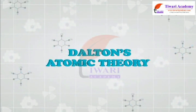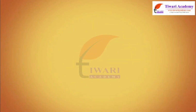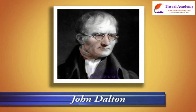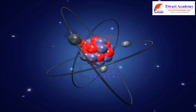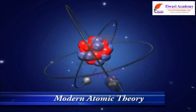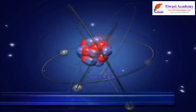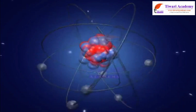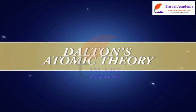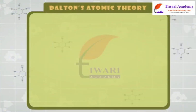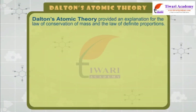Dalton's Atomic Theory. Dear students, John Dalton was an English chemist, meteorologist, and physicist. He is better known for his pioneering work in the development of modern atomic theory and his research into color blindness. Dalton's atomic theory provided an explanation for the Law of Conservation of Mass and the Law of Definite Proportions.